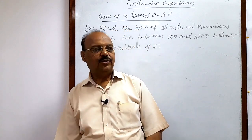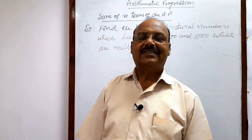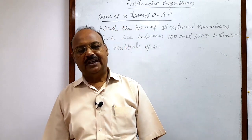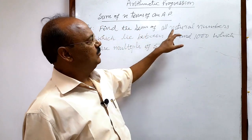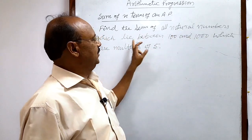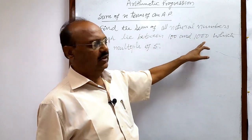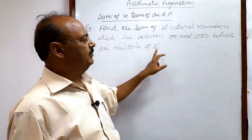Here let us see a very interesting question from the topic sum of n terms of arithmetic progression. The question is: find the sum of all natural numbers which lie between 100 and 1000 which are multiples of 5.